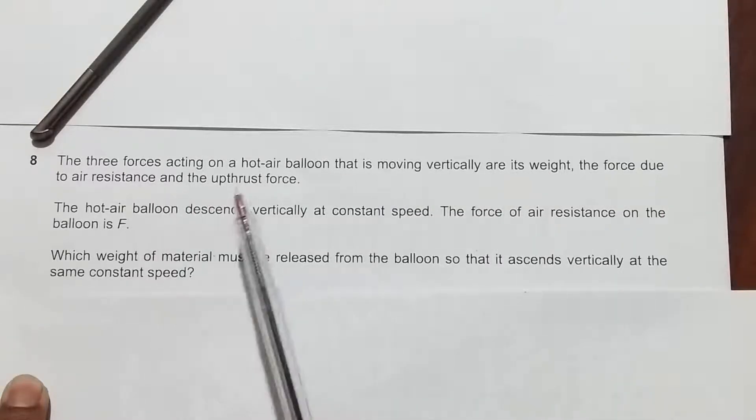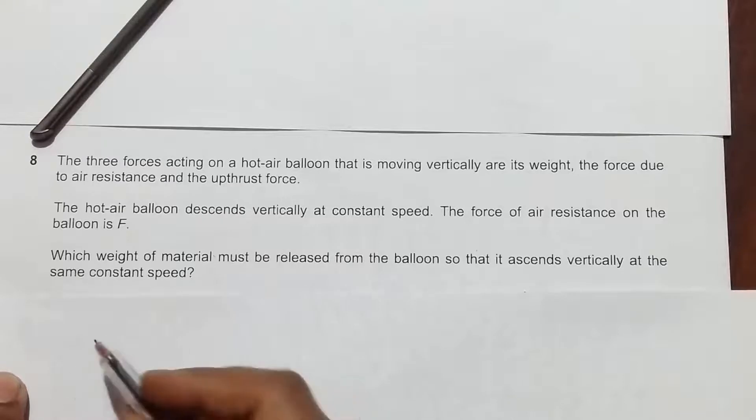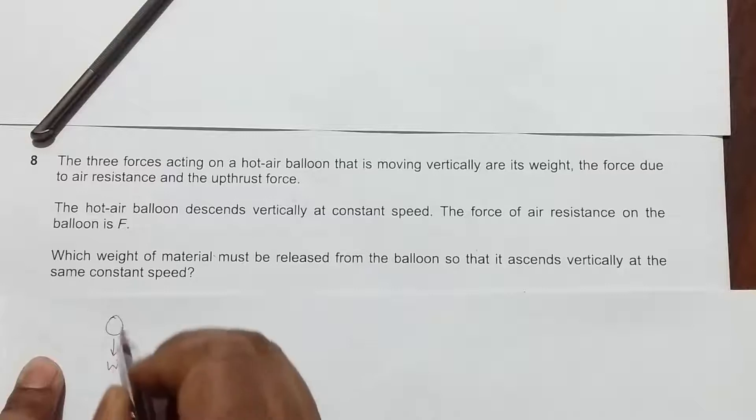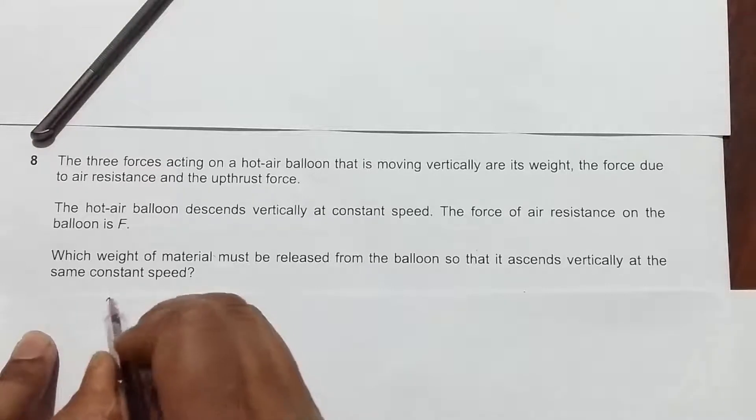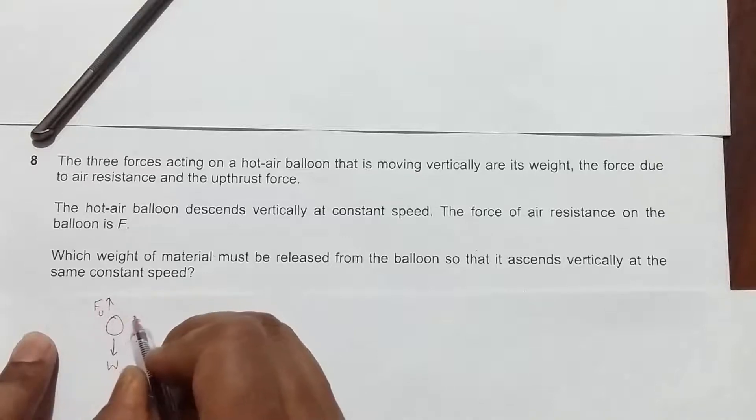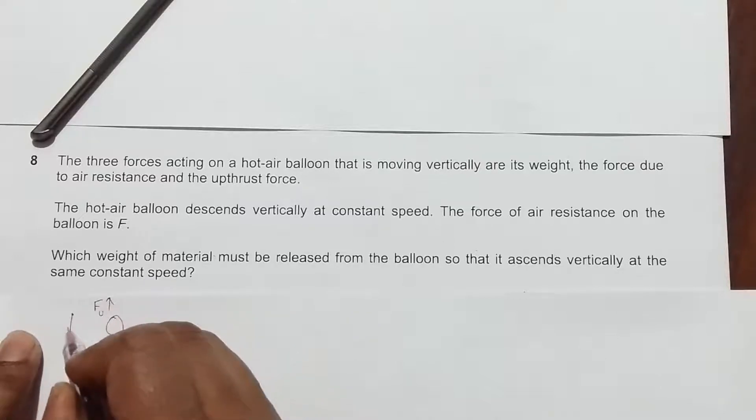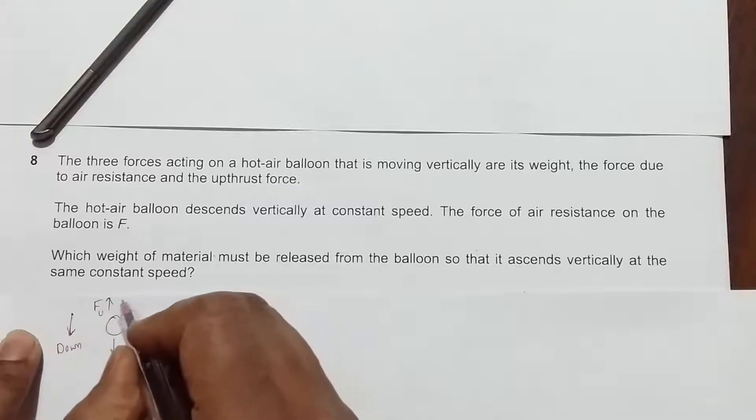There's a body with forces on it: one is the weight, one is the upthrust force which we write as F_U, and the other is the force due to air resistance. If the body is coming down, the force due to air resistance will be upward.